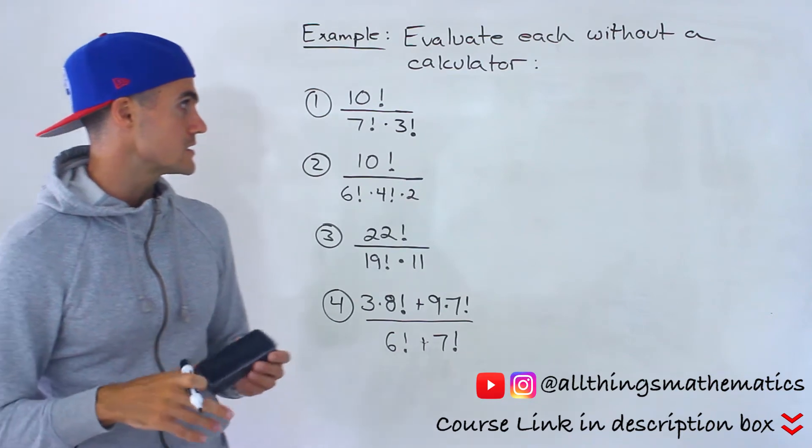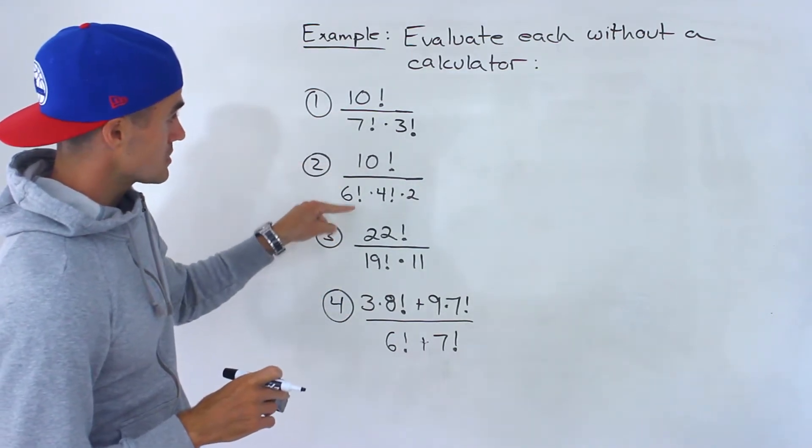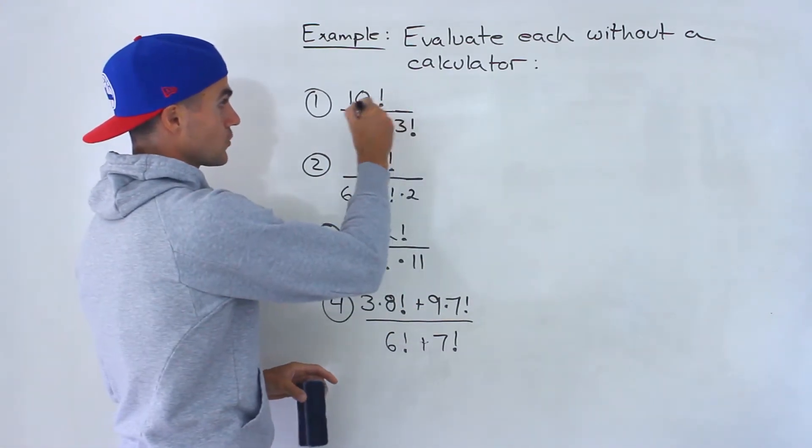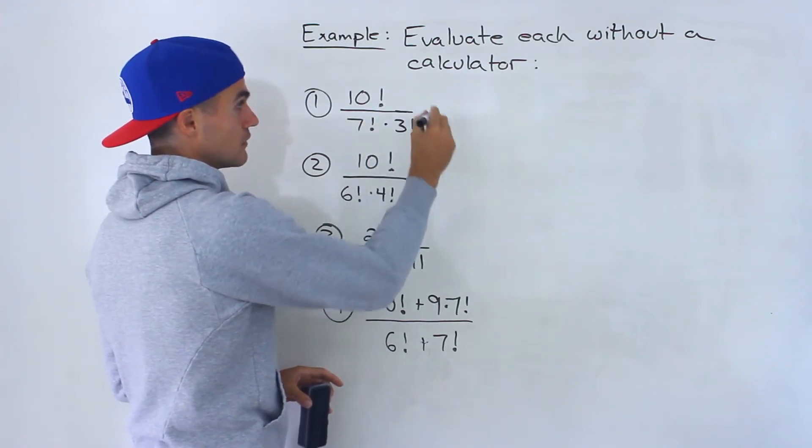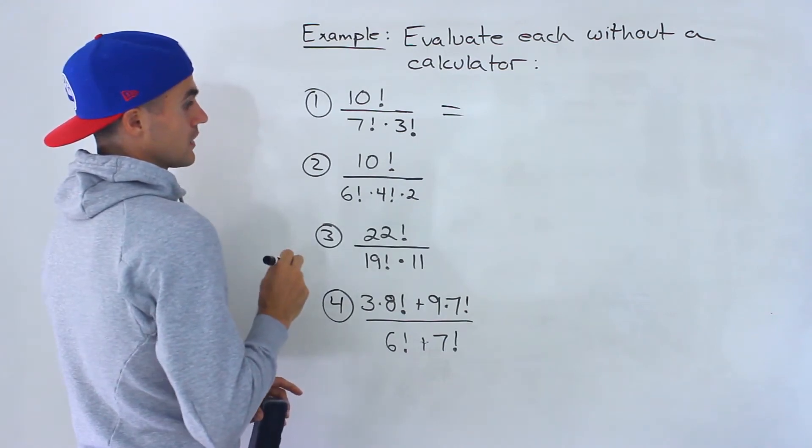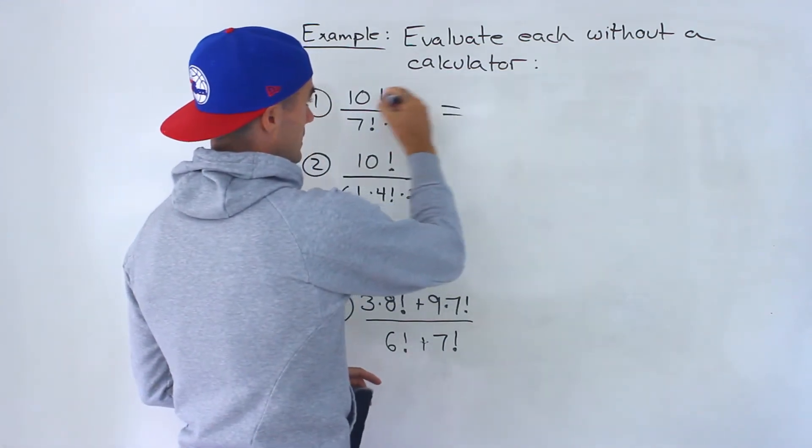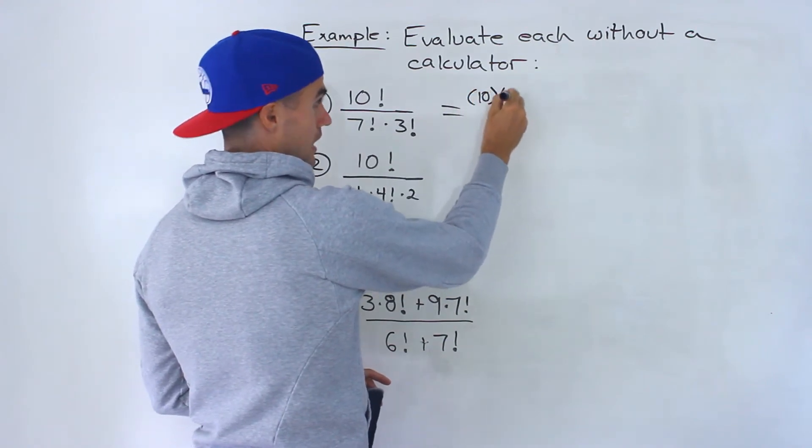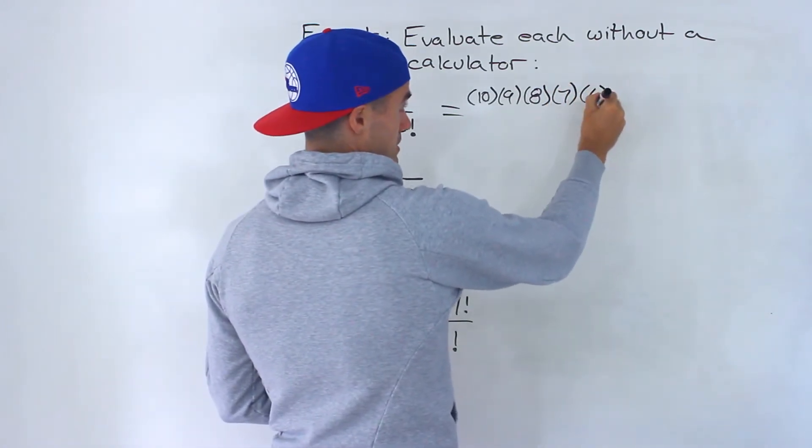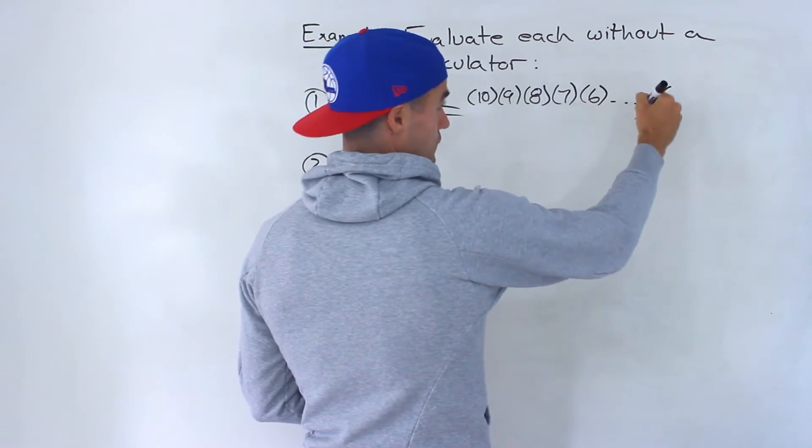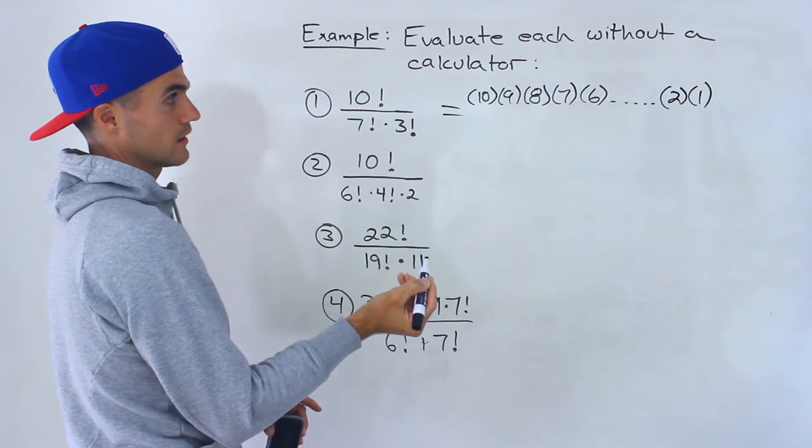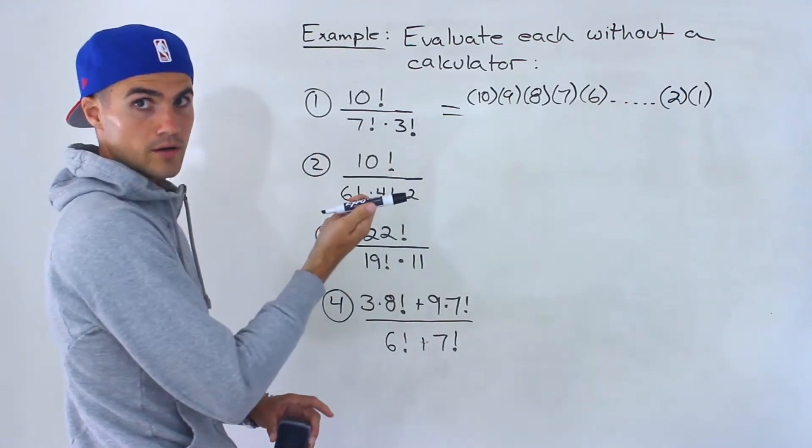We're going to get some practice dealing with permutations. Notice there's a bunch of permutations here. We're going to do it without a calculator. Number one, we got 10 factorial over 7 factorial times 3 factorial. So the way you can rewrite this is 10 factorial - it's 10 times 9 times 8 times 7 times 6 dot dot dot times 5 times 4 times 3 times 2 times 1. That's what the numerator is going to be.